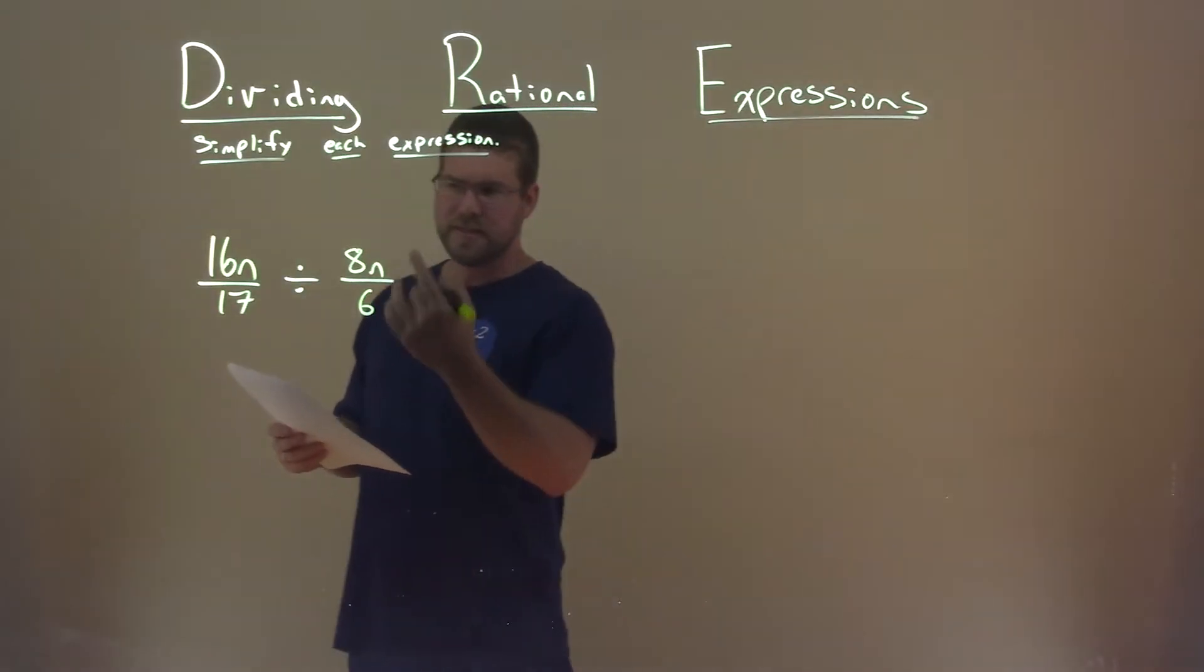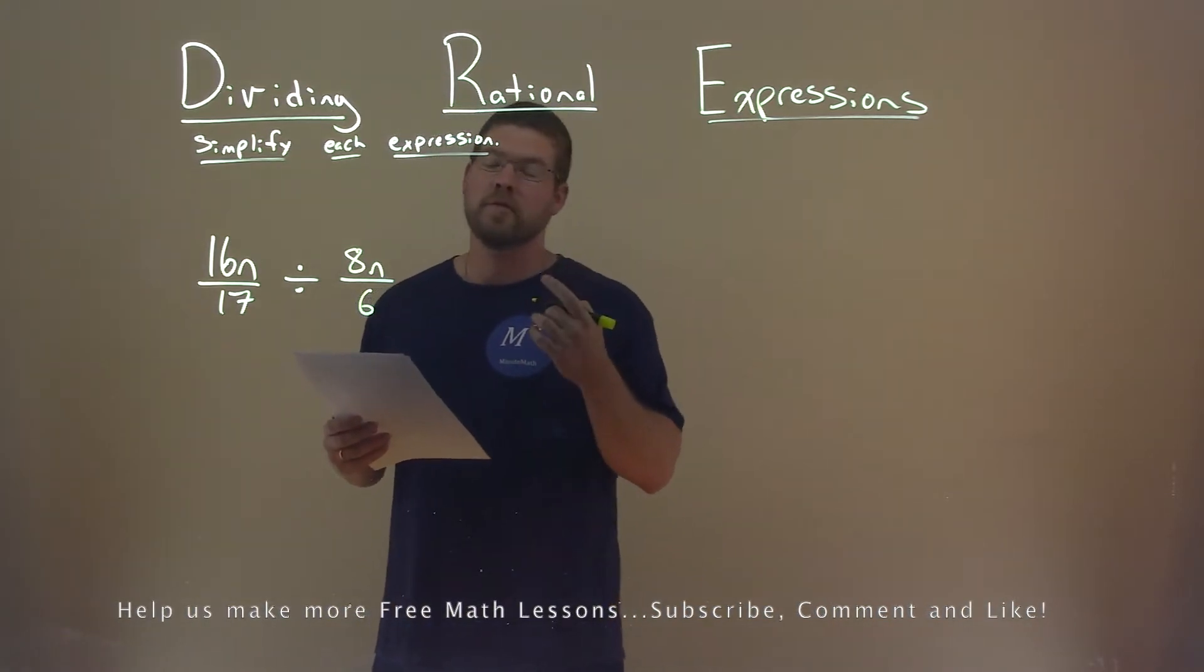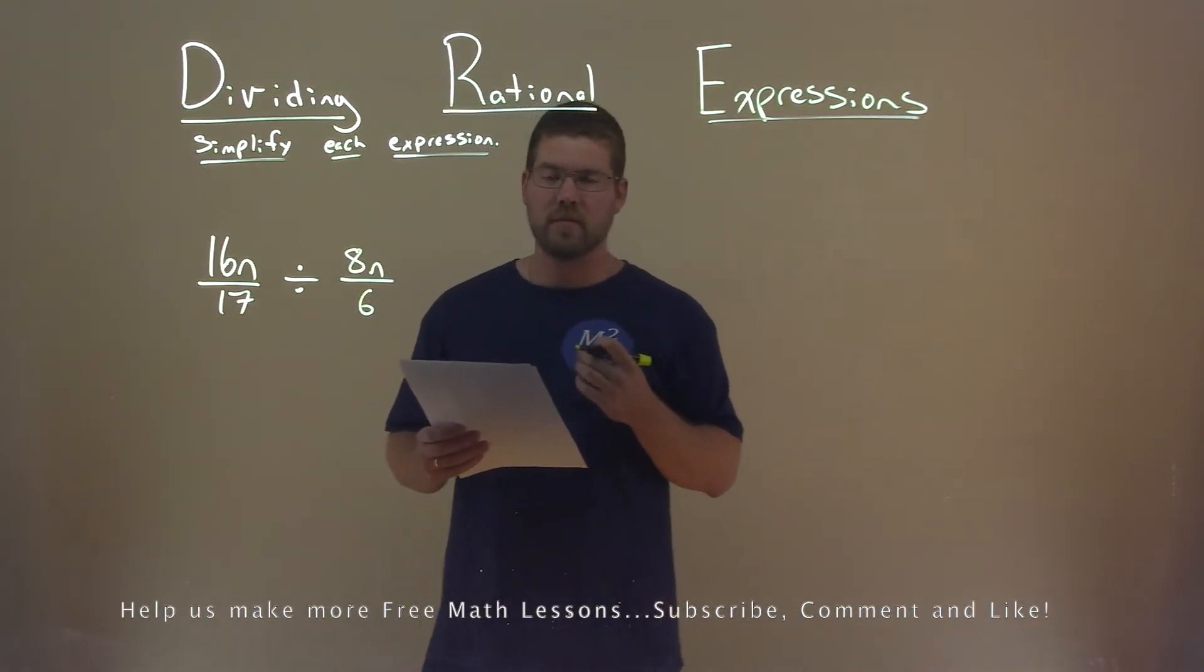We're given this expression right here, 16n divided by 17, divided by 8n over 6. And we need to simplify this expression.